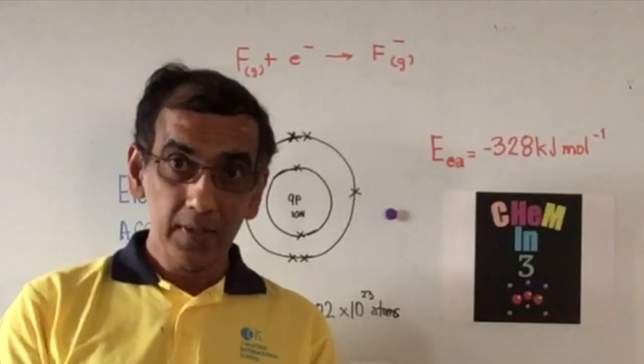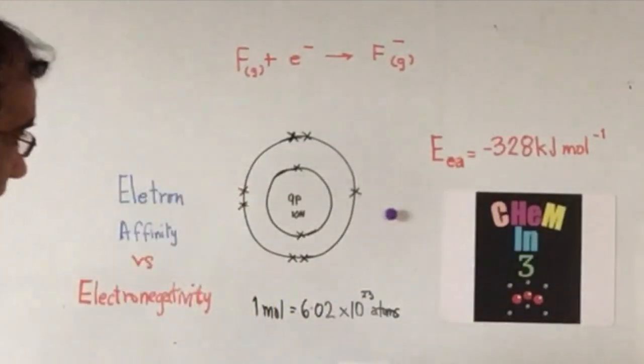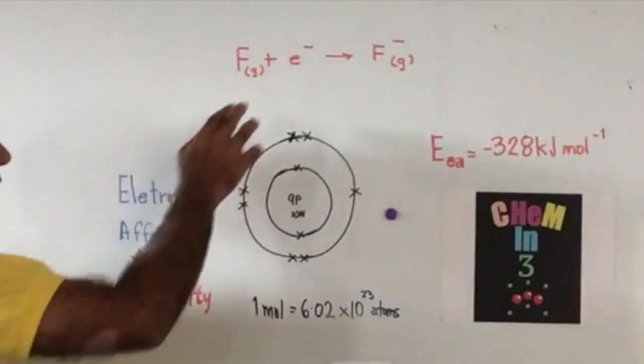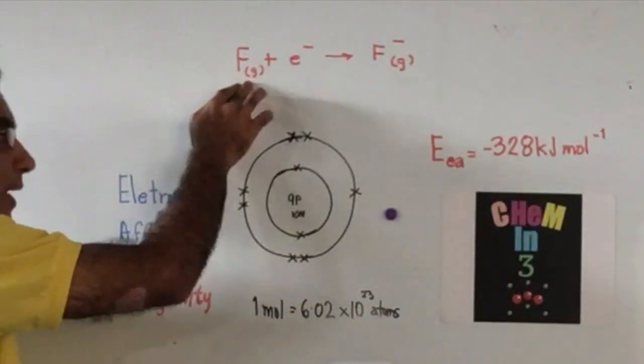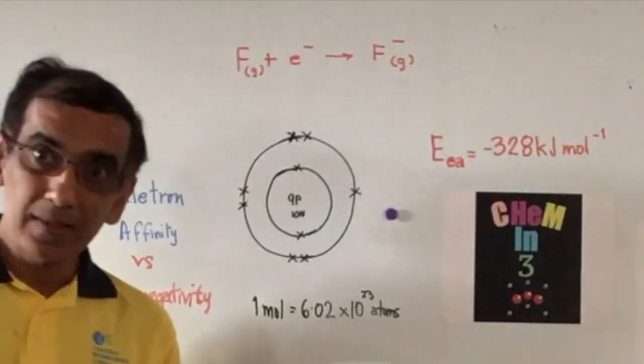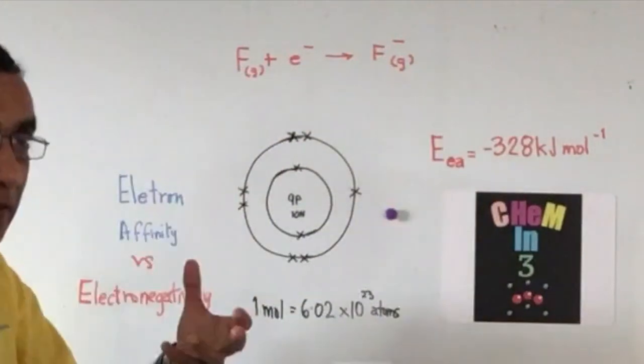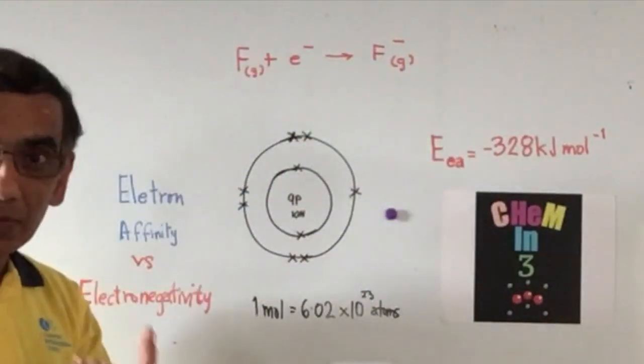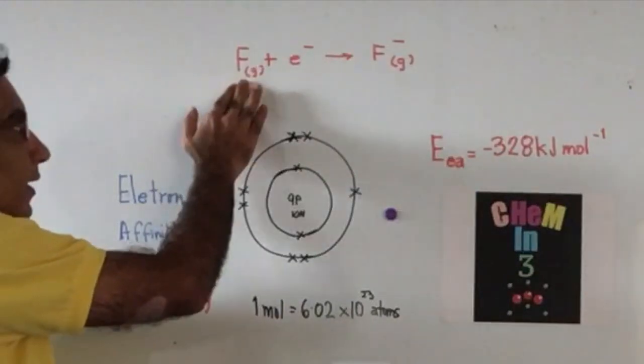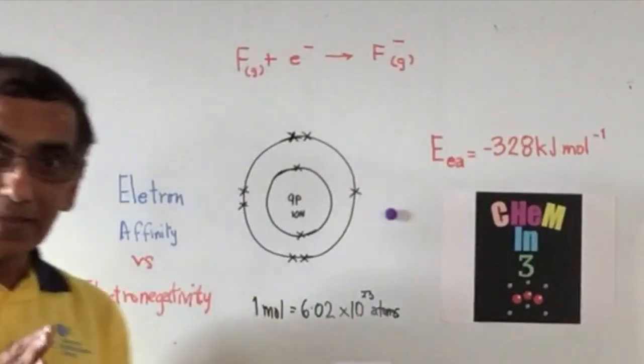Let's begin first with electron affinity. As the name suggests, it's all about adding an electron to an atom. And it's a measure of how much affinity or attractiveness, if you will, this individual atom has for a single electron.